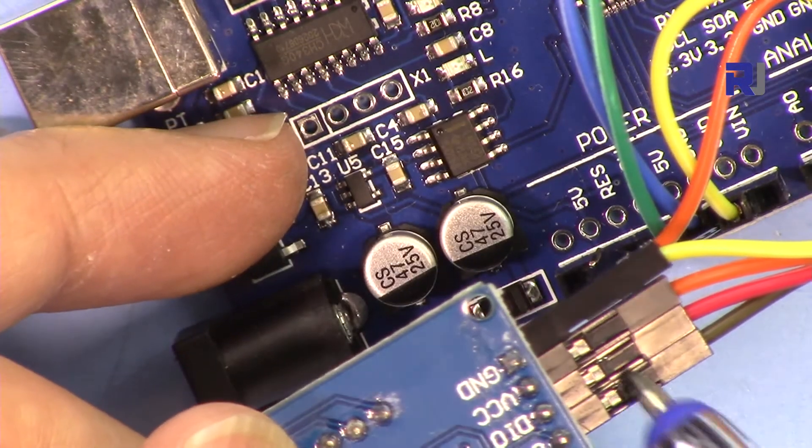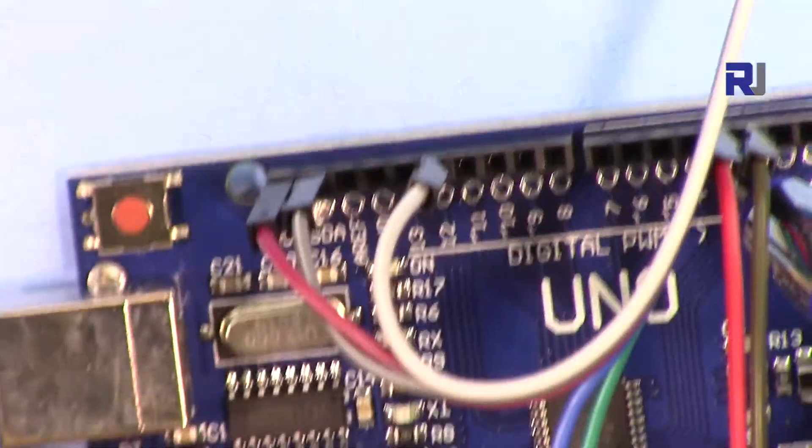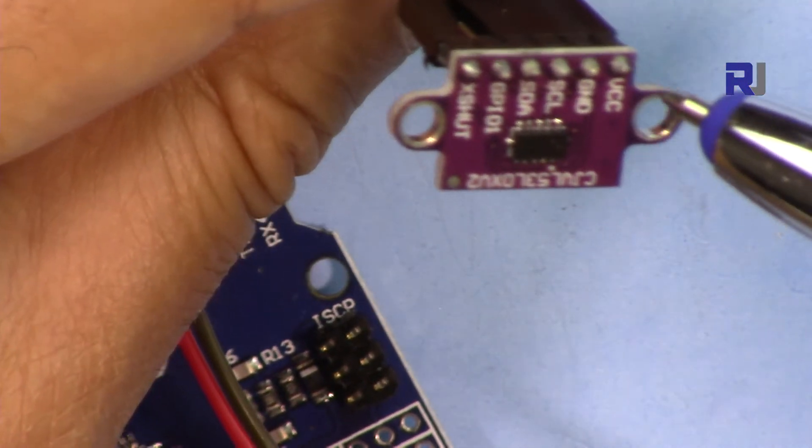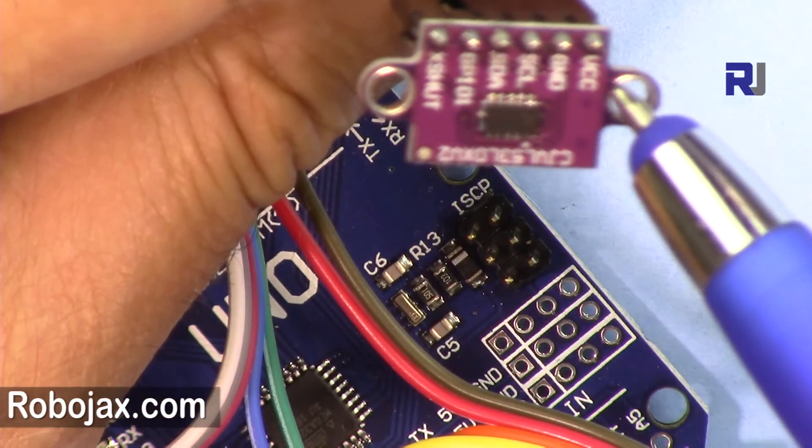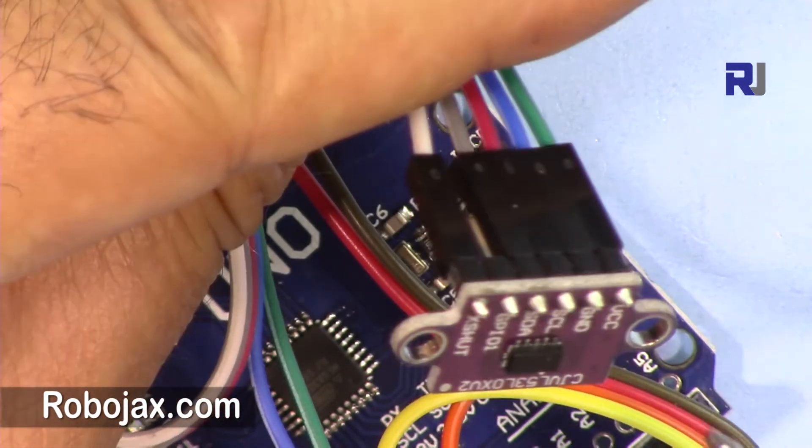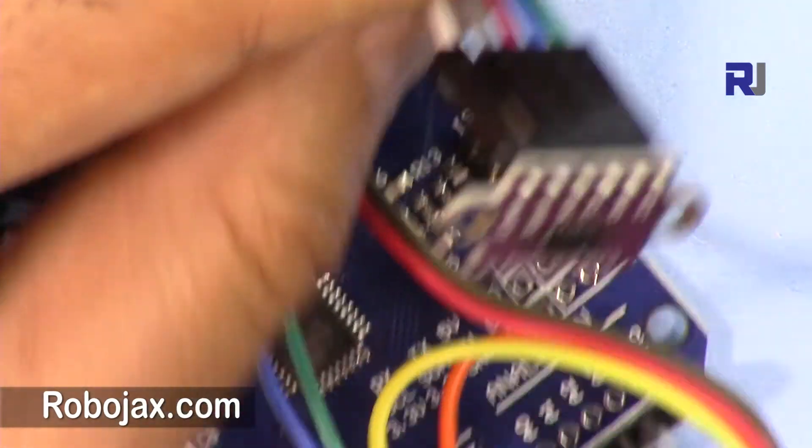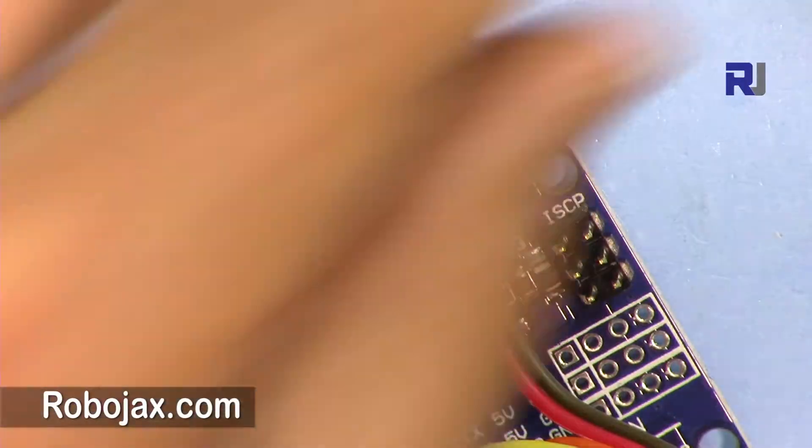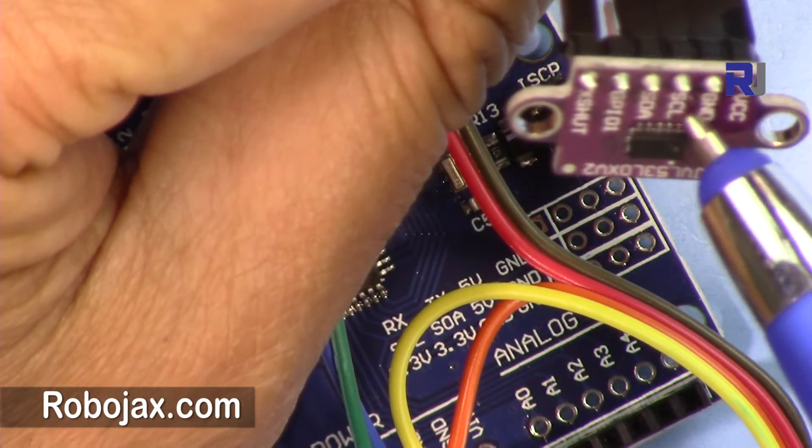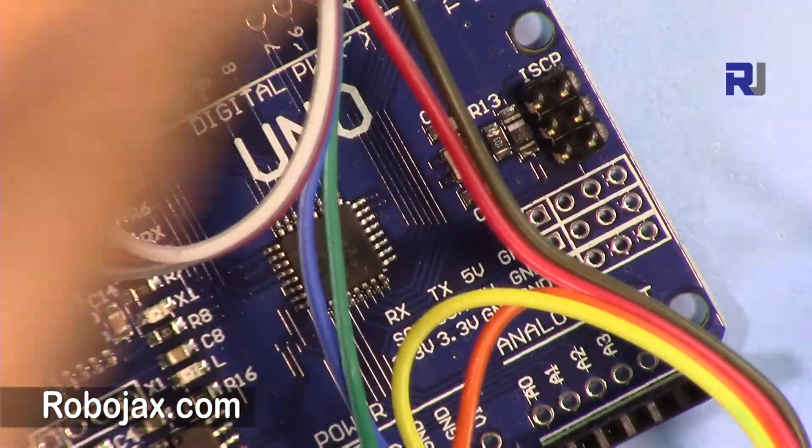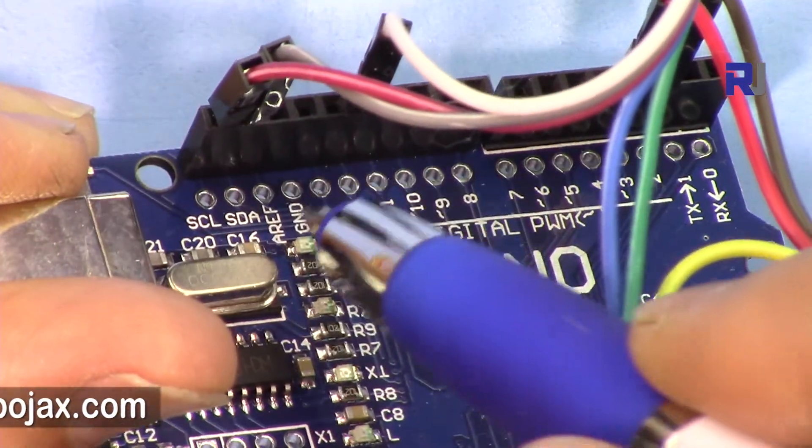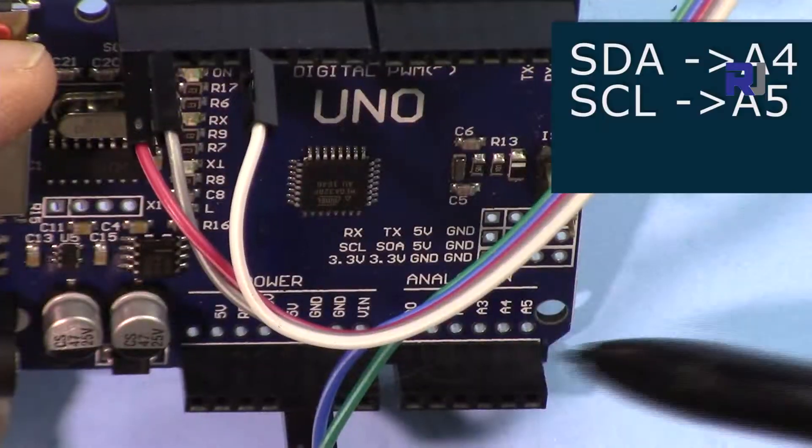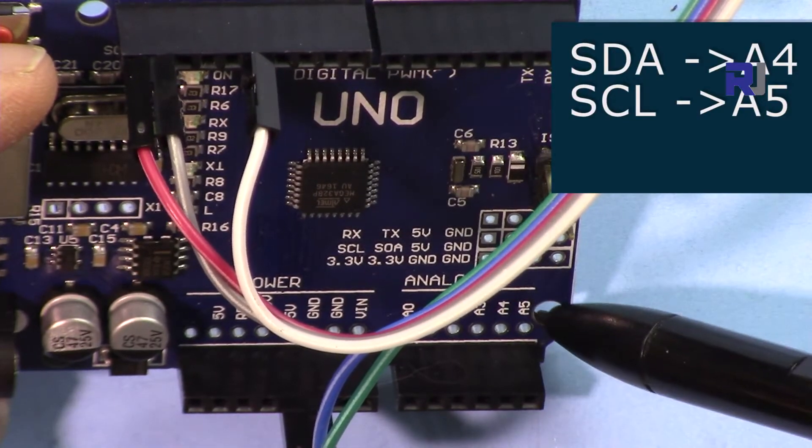For this laser module, we have VCC connected to 5 volts. Green is VCC, blue is ground. This is connected to 5 volts and to ground respectively on the Arduino. Then we have clock SCL and SDA. If your Arduino doesn't have SDA and SCL pins, SDA is connected to A4 and SCL is connected to A5.